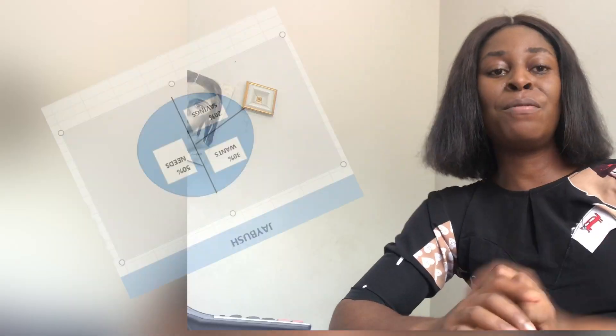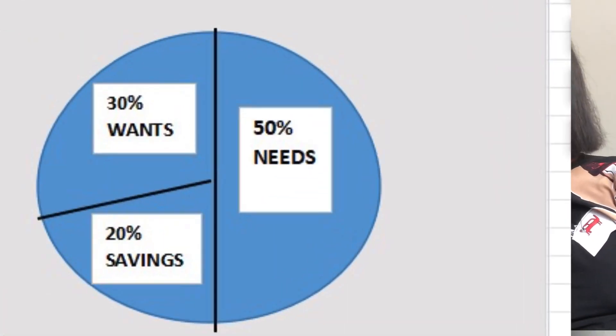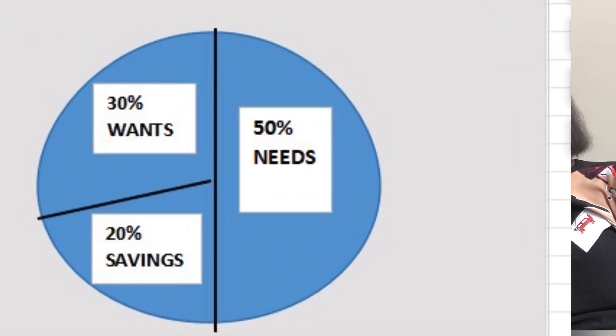Welcome back to Bush Lawlers. My name is Jay Bush and I'm here to help you manage your finance, manage your wealth. Today I'll be talking about how to manage your money using the 50, 30, and 20% rule.